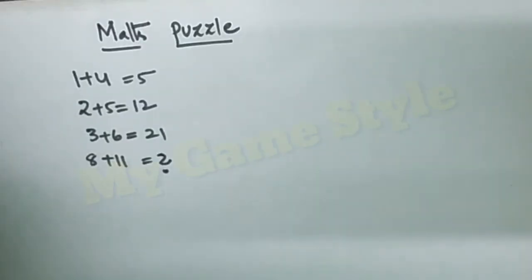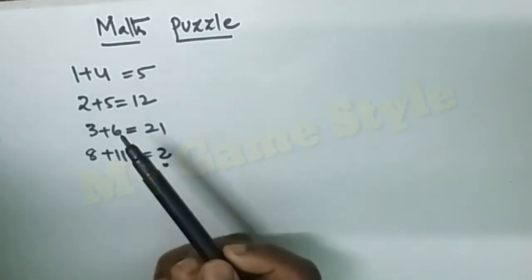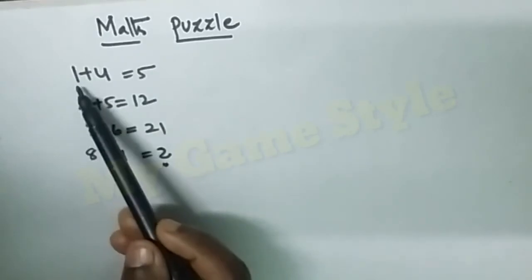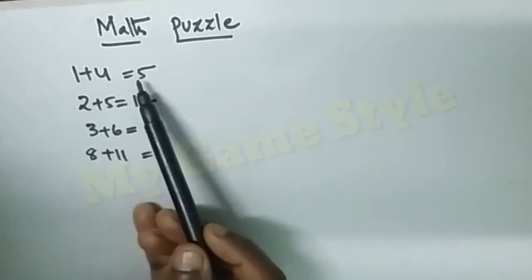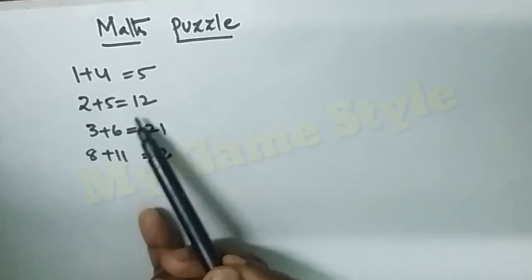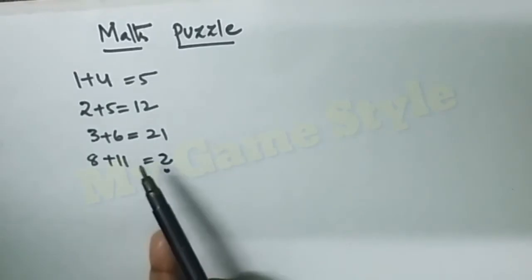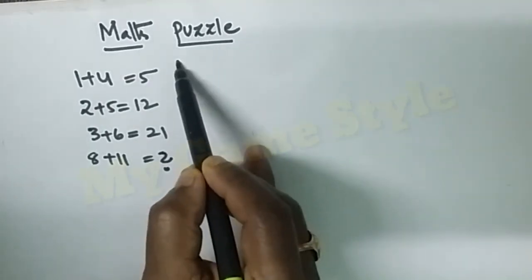Hello friends, welcome to my channel. Today I will show you how to solve this problem. Here's the solution: 1+4=5, 2+5=12, 3+6=21, and 8+11=? Let's go to the solution without any delay.